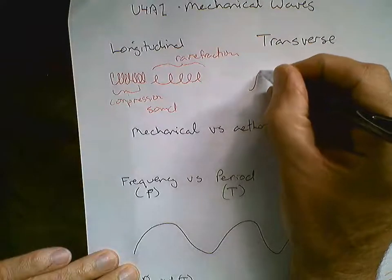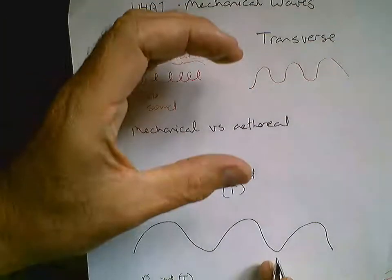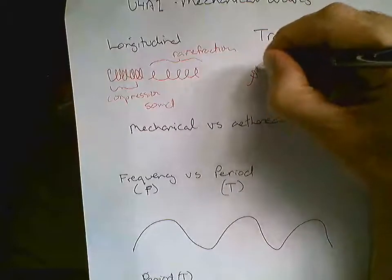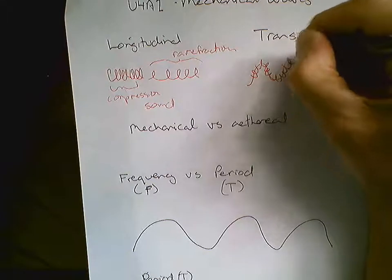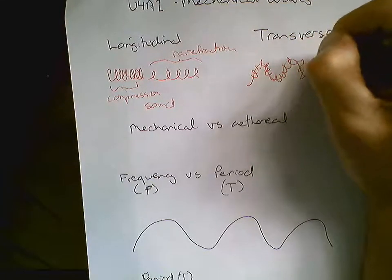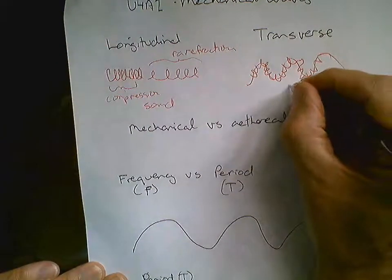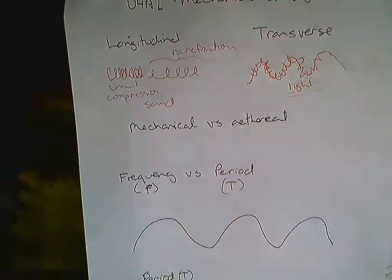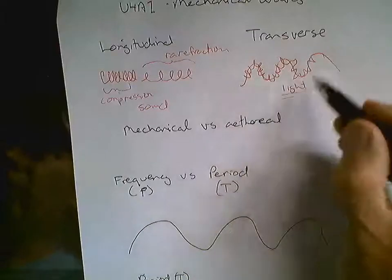A transverse wave will travel up and down. This is like taking a slinky on the ground and giving it a flick — it goes back and forth. So it's two different types of patterns. This is like a light wave — it sort of looks like a mechanical wave on a beach, where this one goes back and forth and this one travels like this.